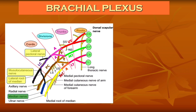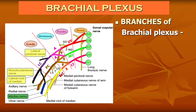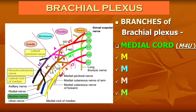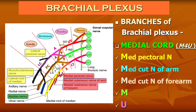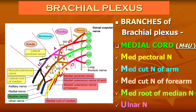Now we will see the branches from the medial cord. The medial cord branches can be remembered with the mnemonic M4U — four times M and U. M for medial pectoral nerve, M for medial cutaneous nerve of arm, M for medial cutaneous nerve of forearm, M for medial root of median nerve, and U for ulnar nerve. The ulnar nerve is the continuation of the medial cord.